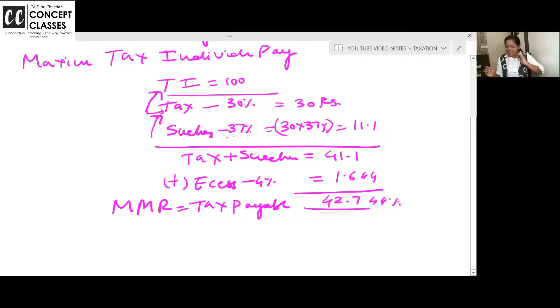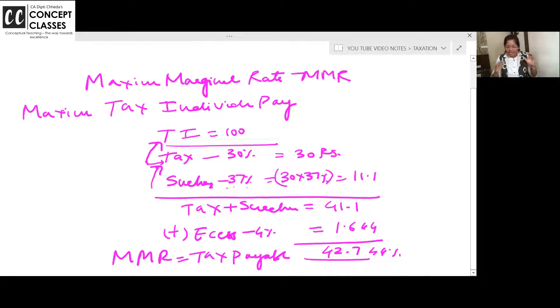Many times in the exam, if this is asked in MCQs and if you remember it, fine. Maximum tax an individual should pay 30%, surcharge on that 37%, and tax plus surcharge put together ESS 4%. So maximum marginal rate of tax an individual should pay 42.744% on 100 rupees of income. I hope you are clear with this hierarchy.